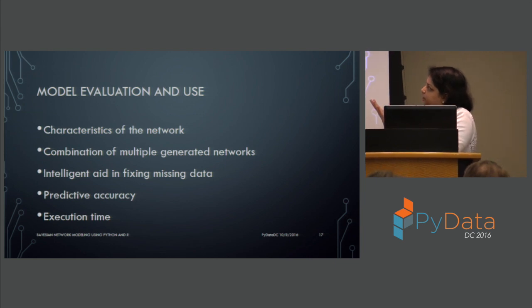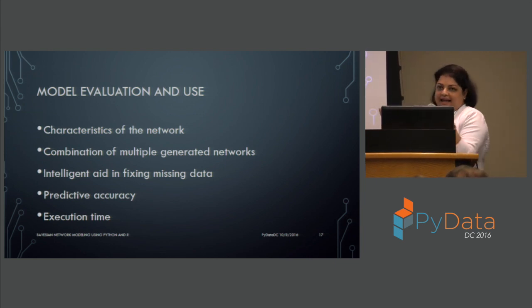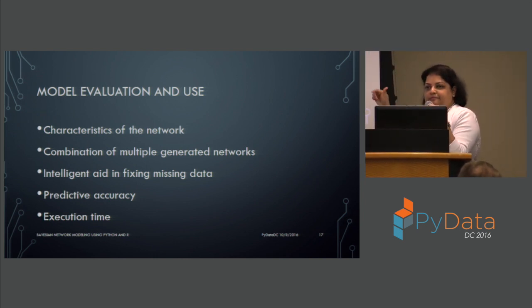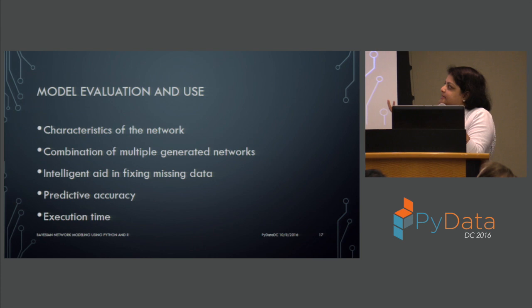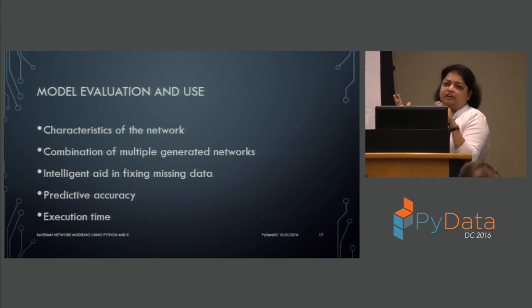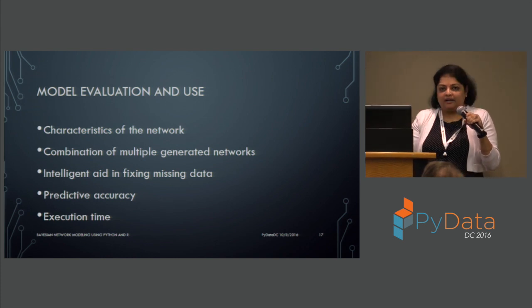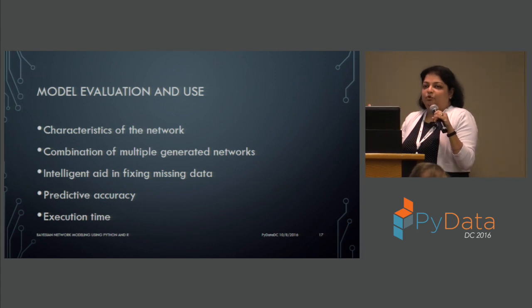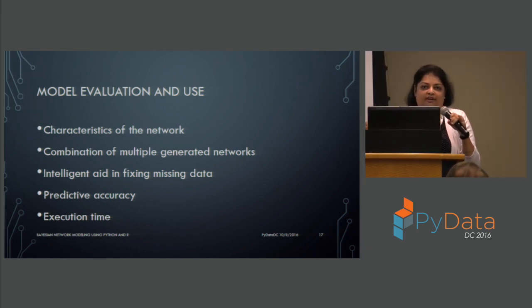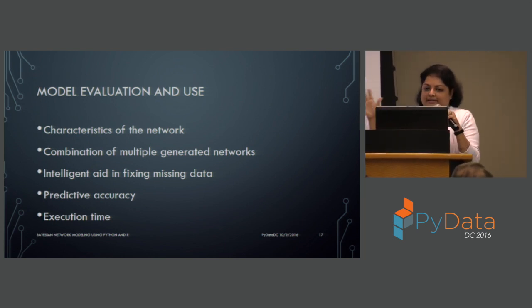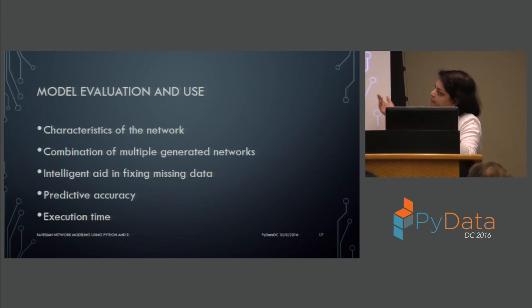There are different ways to evaluate your models. You can look at the characteristics of the network and the relationships between attributes. You can run the algorithm multiple times to generate multiple networks, then keep only the links that occur most often — the R example I'll be showing does exactly that. You can also use the model as an intelligent aid for fixing missing data. Of course, you want your model to have high predictive accuracy while also executing in reasonable time.